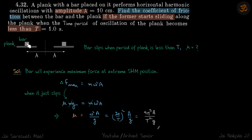If the bar has to slide, it has to experience a maximum amount of frictional force, which means its acceleration should also be maximum. That will happen at the extreme position. So the bar will experience maximum force at the extreme SHM position, and at that time F_max equals m times acceleration, and acceleration at the extreme of SHM is ω²A.